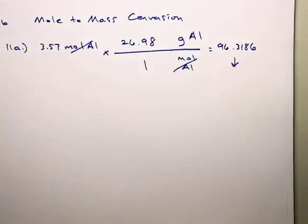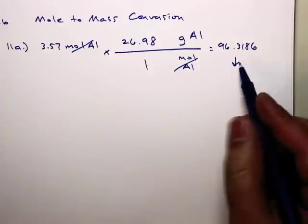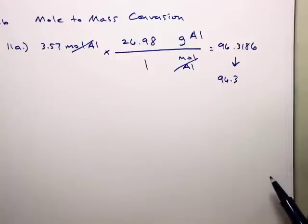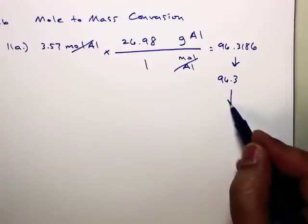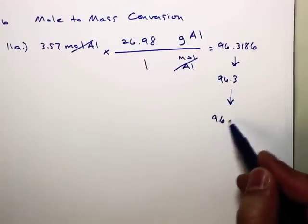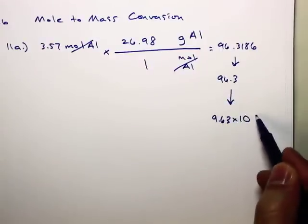No. We know we got to factor in significant figures. How many should I report in this answer? Three, right? Should I put 96.3 like that? Why? What's wrong with that? There you go. Got to be in proper scientific notation. 9.63 times 10 to the...